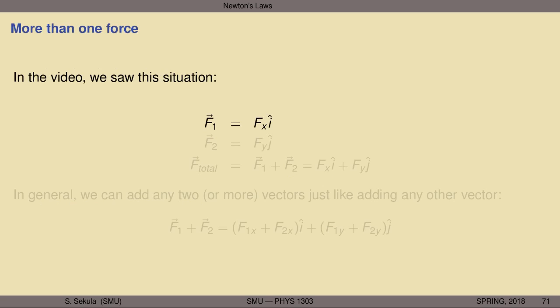What happens when there's more than one force? We can describe what we saw: I first applied a force along one axis — the x-axis — which I might describe as a vector F₁ equal to a component Fx in the i-hat direction. Then I separately showed a force in a perpendicular direction, F₂, with a component Fy in the j-hat direction. And then I showed what happens pushing simultaneously with F₁ and F₂.